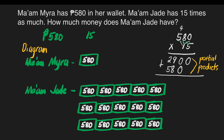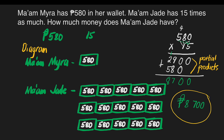Adding the partial products: bring down 0; 0 plus 0 is 0; 9 plus 8 is 17 — carry 1; 5 plus 2 plus 1 is 8. Our answer is 8,700 pesos. That's the money Mom Jade has, which is 15 times as much as Mom Mayra's money.